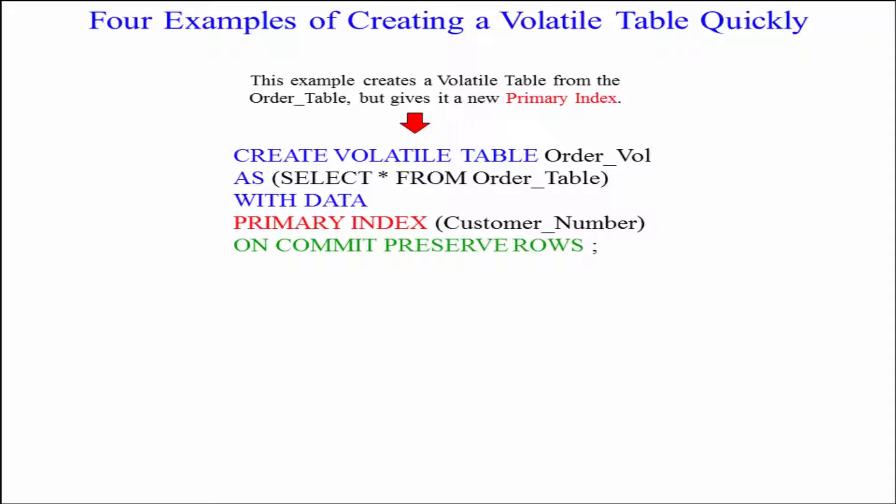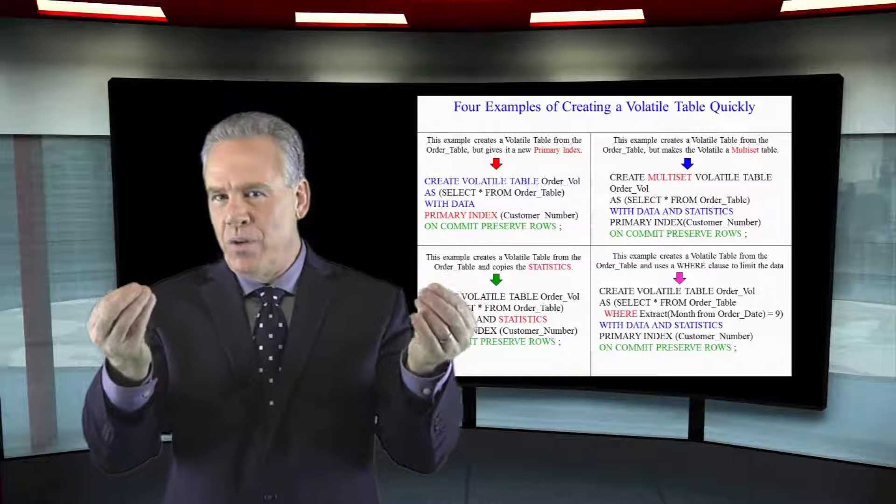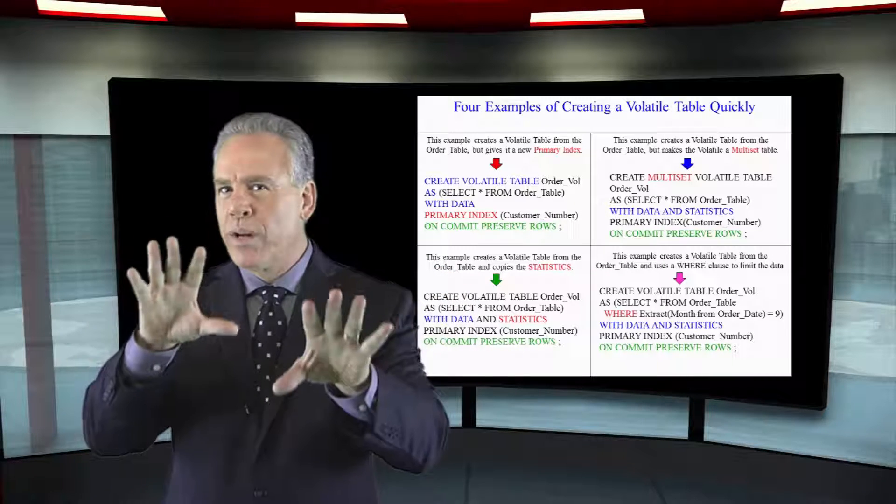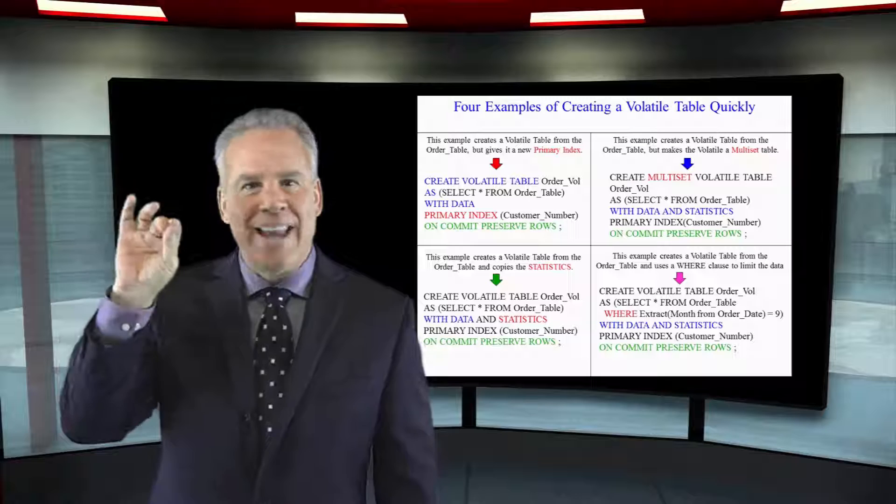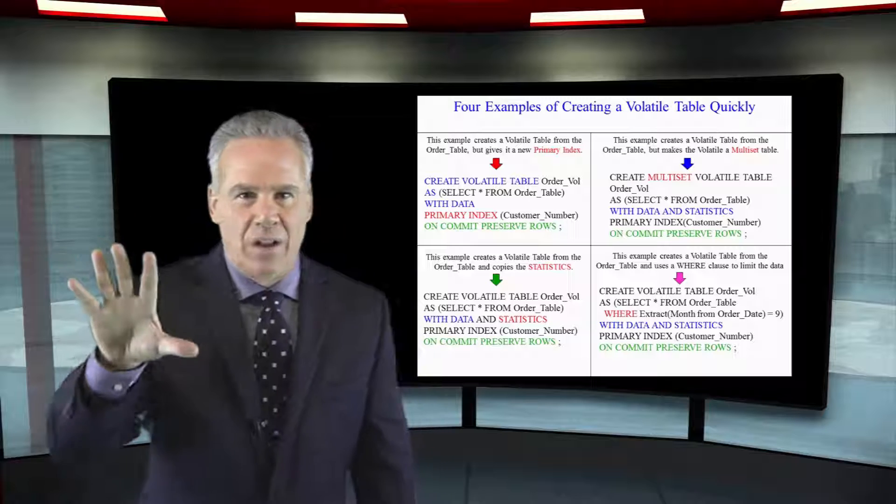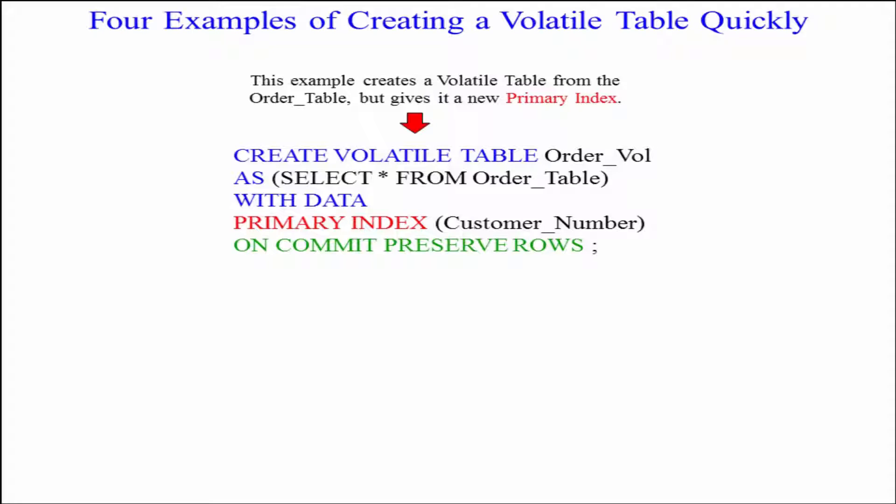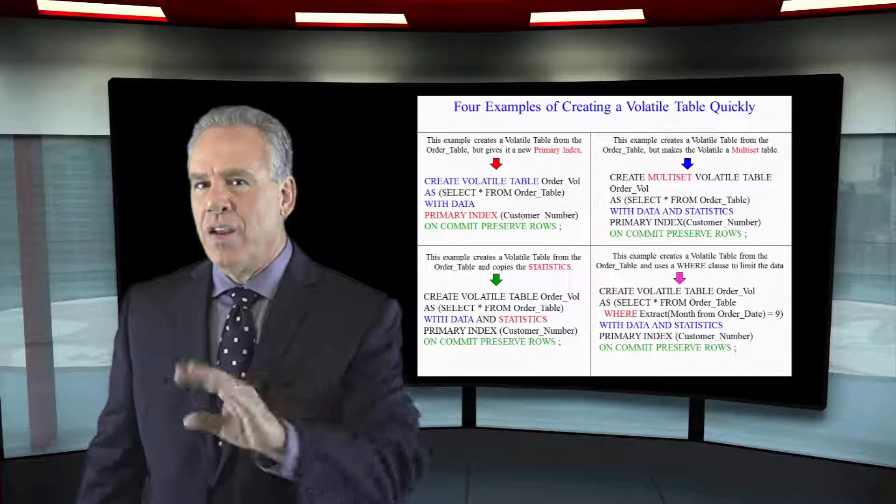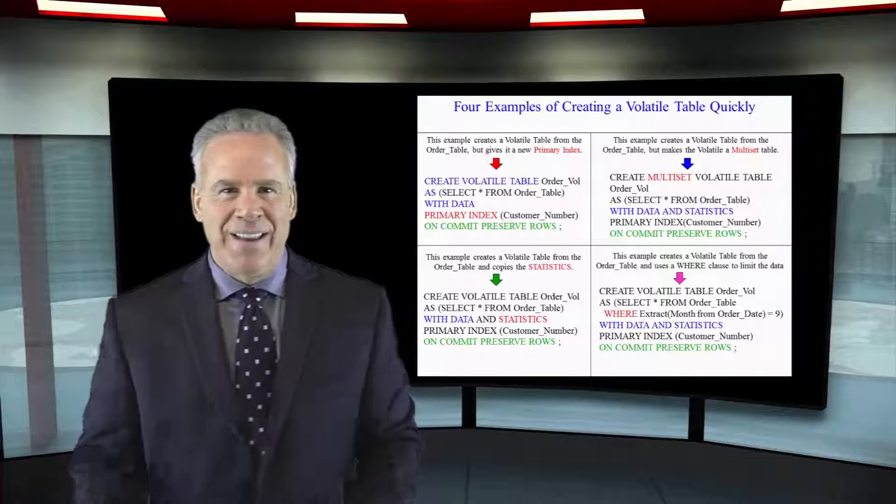Create volatile table, I give it a name, as select everything from order table. So it's going to pull all of the information from the order table. It won't bring over the exact same data definition or DDL because I've got the parens in the select asterisk. I say I want the data to come. I'm giving it a primary index and on commit preserve rows keeps those in there the entire session.